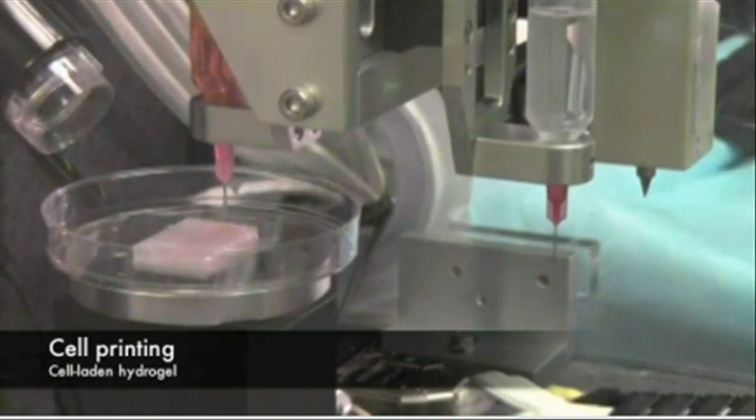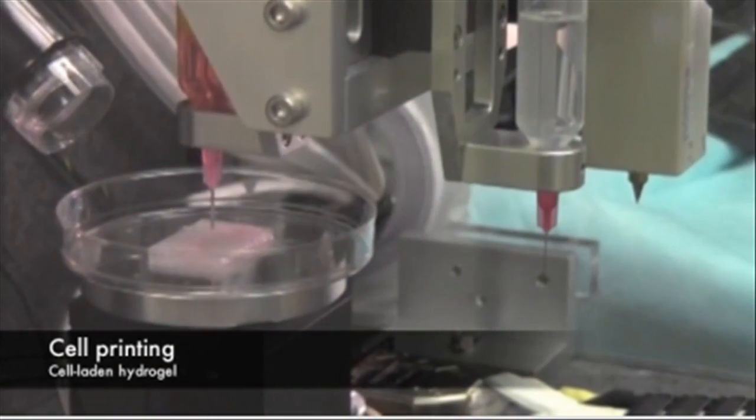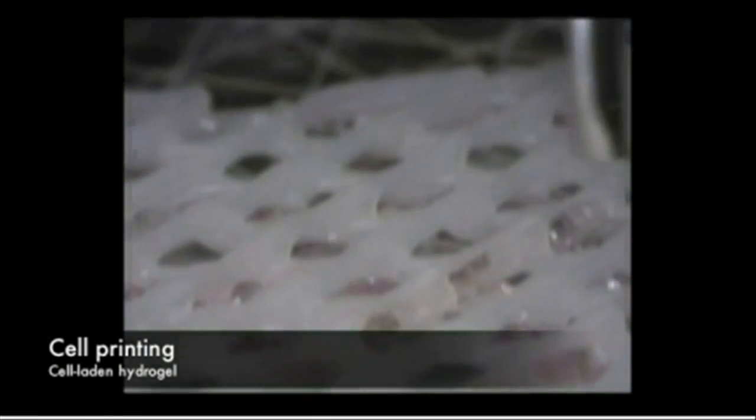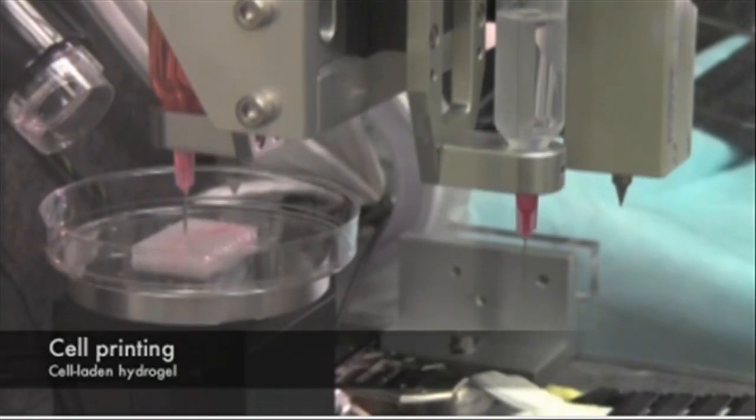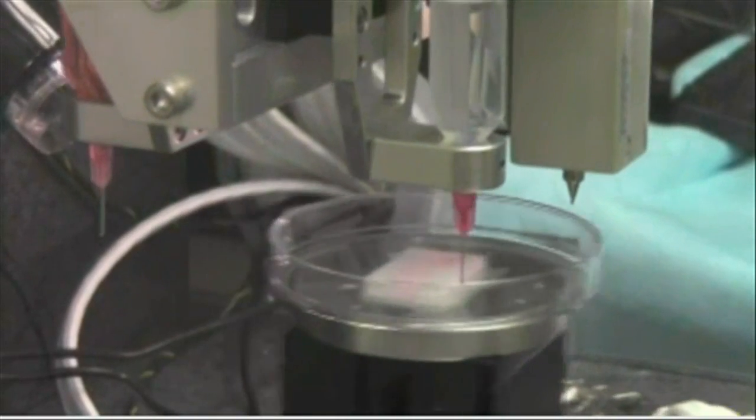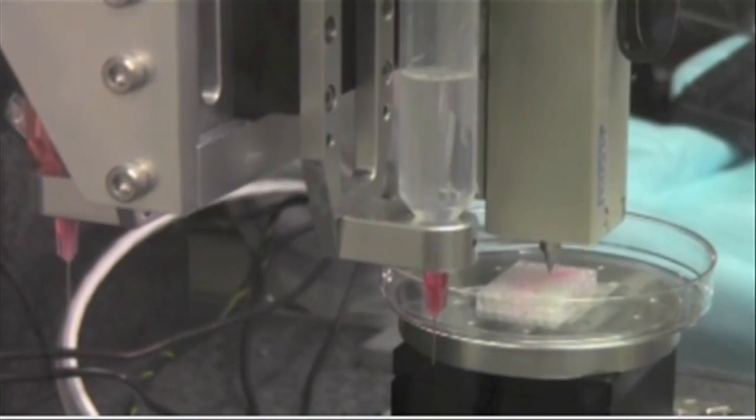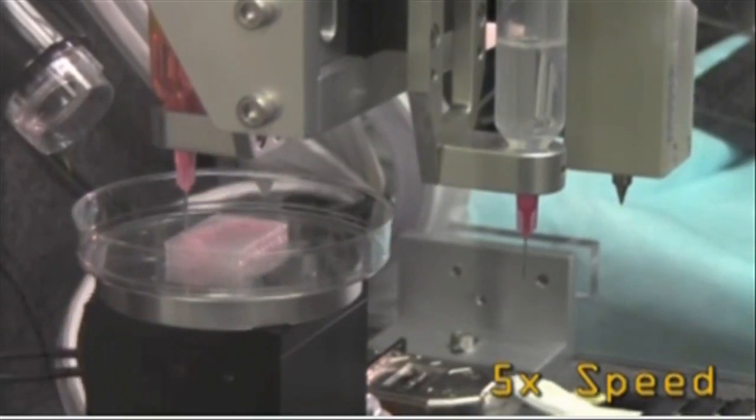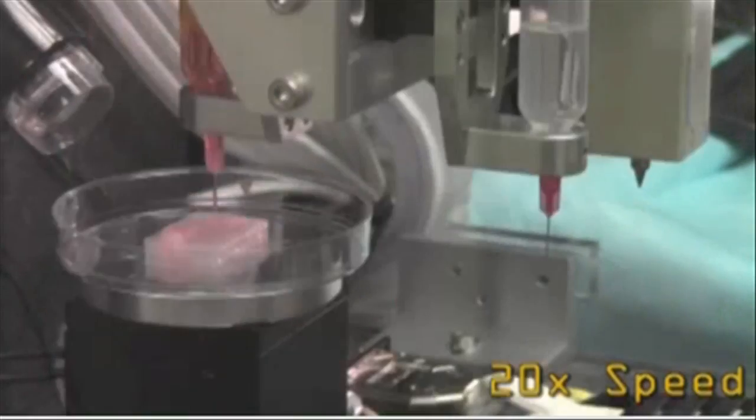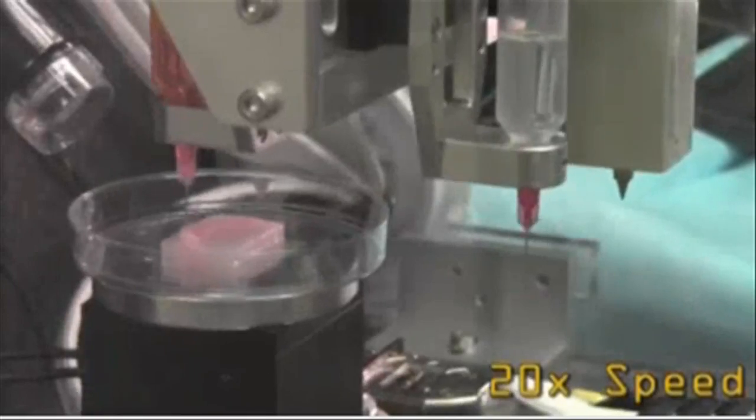The precision of 3D printing makes it a promising method for replicating the body's complex tissues and organs. However, current printers based on jetting, extrusion, and laser-induced forward transfer cannot produce structures with sufficient size or strength to implant in the body. The integrated tissue and organ printing system, ITOP, developed over a 10-year period by scientists at the Institute for Regenerative Medicine, overcomes these challenges.